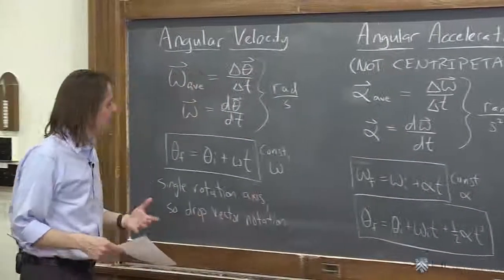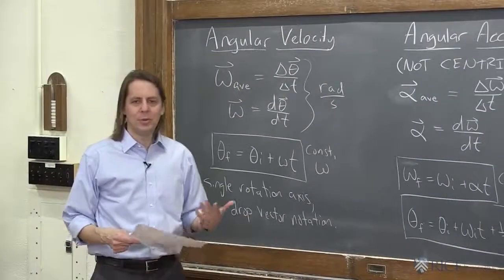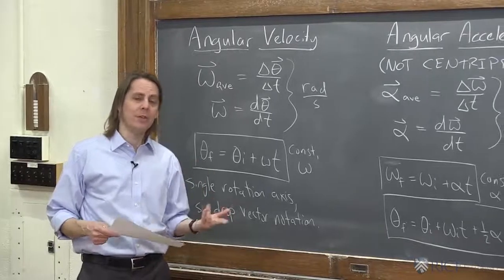Exactly the same as vf squared equals vi squared plus 2ad. So it's all the same. So I think what we'll do next, we'll just do a quick problem to show you that it all works exactly the same. You just got to remember to use radians instead of meters.